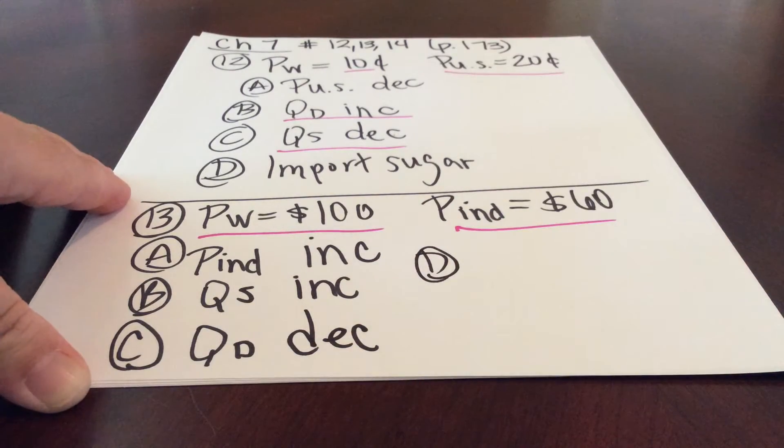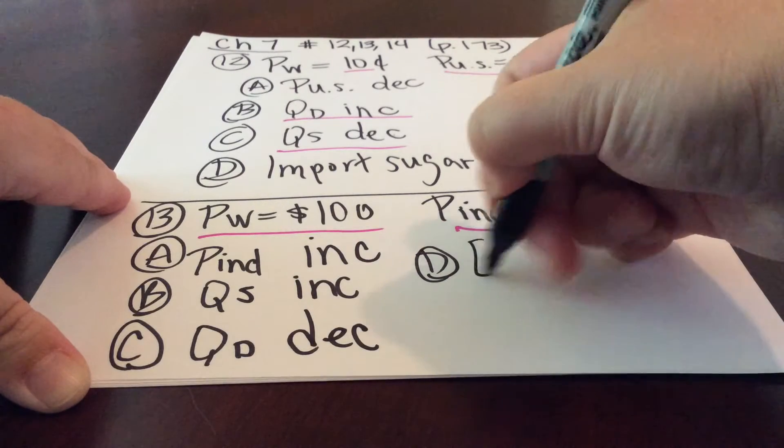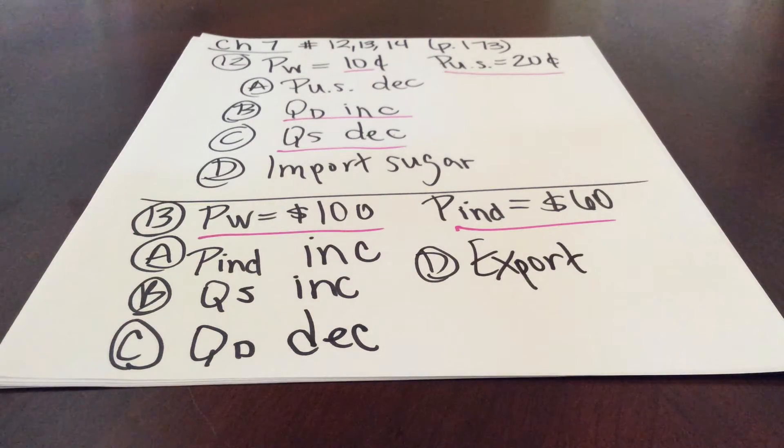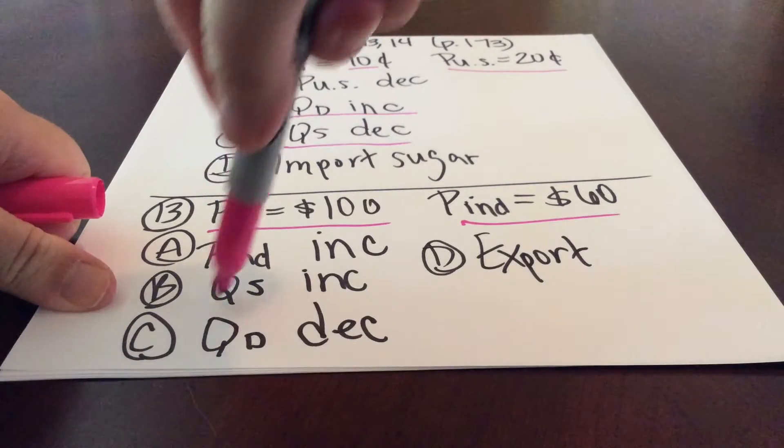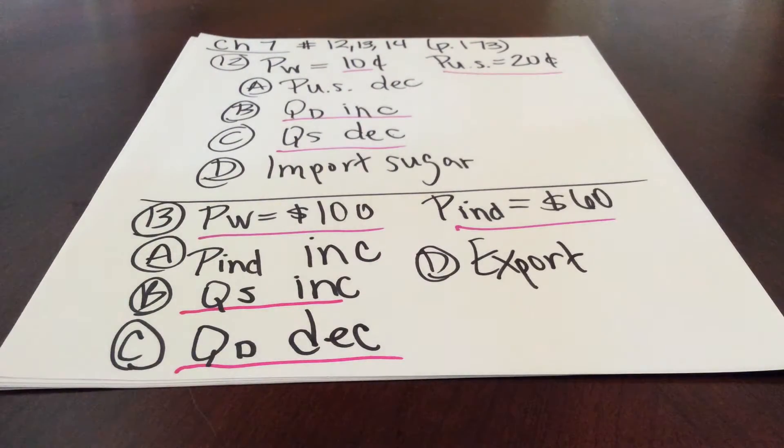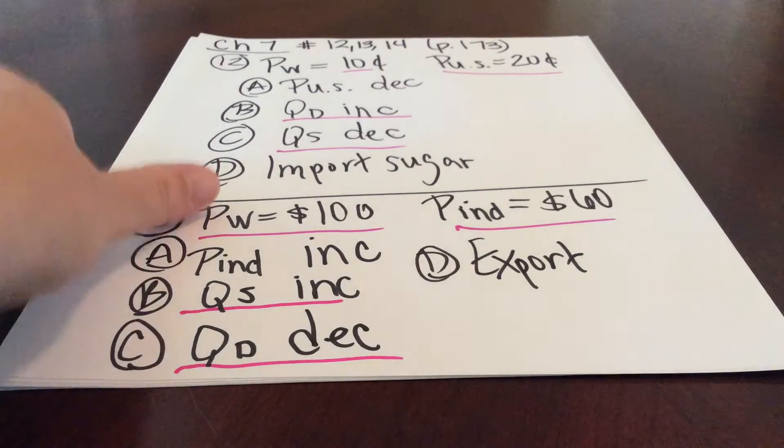So part D then says, okay, well, is India going to export or import steel? And again, because the price of steel in India was lower than the rest of the world, they have that comparative advantage, and we're going to see them export. Again, now in our domestic market in India, quantity supplied is going to be greater than quantity demanded, and so the steel producers in India will export the difference.